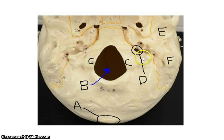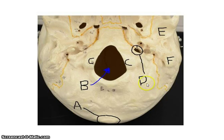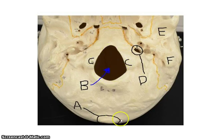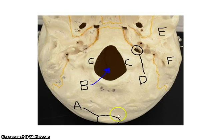Looking at the inferior view of the skull, here we have the temporal bone. You can see the mandibular fossa where the mandible is going to articulate, and also the mastoid process of the temporal bone. Here you have the occipital bone. We have the jugular foramina, the occipital condyles — condyles being a smooth surface — the foramen magnum, and the external occipital protuberance of the occipital bone.